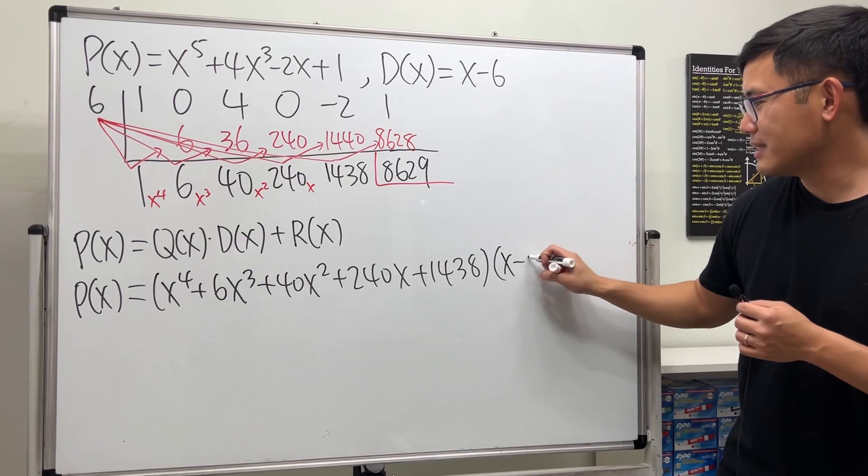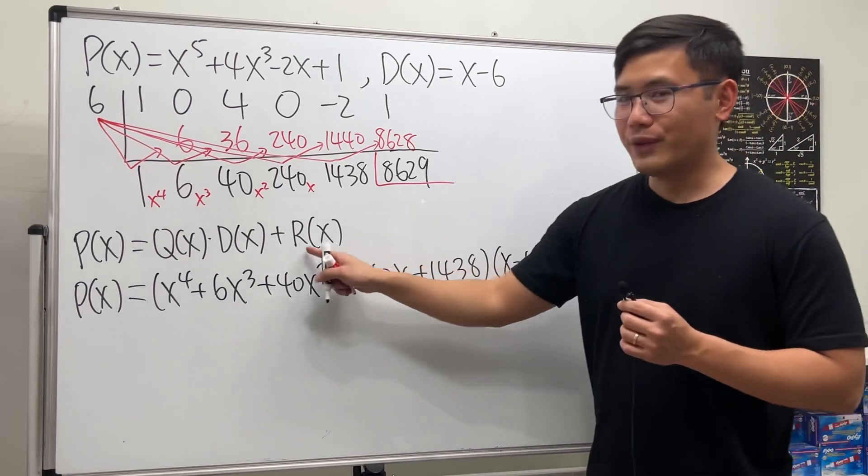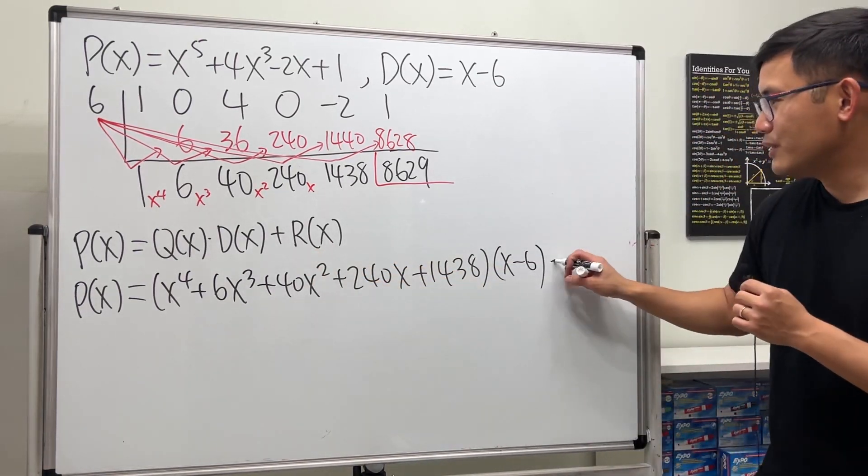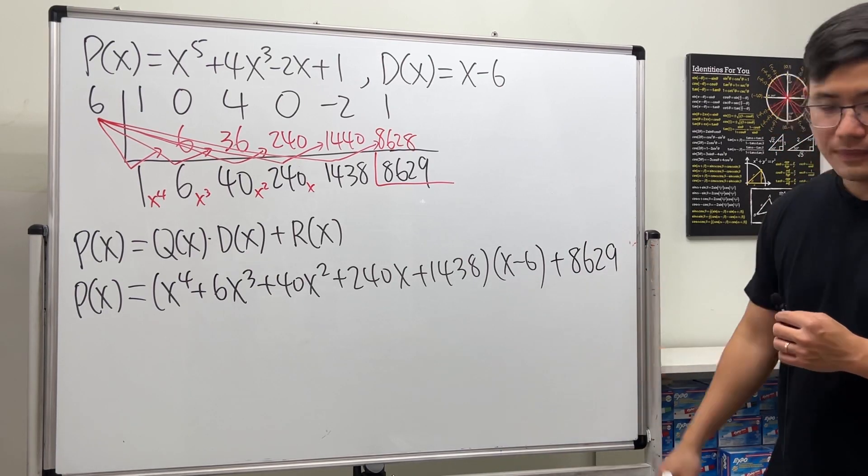And don't forget, we still add the remainder, which is 8629, just like that.